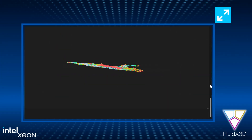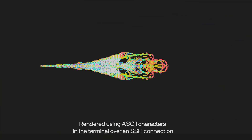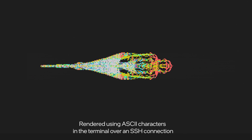Right here, we have a simulation running live on a single two-socket server in our data center, using these latest processors. Let's rotate to a top-down view so we can see the fluid flow more effectively. This is a low-resolution preview of the fluid flow around an airplane model. As you can see, those vortices are coming off the back of the airplane's wings.